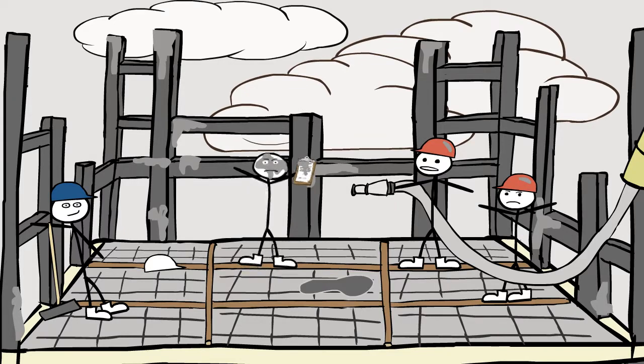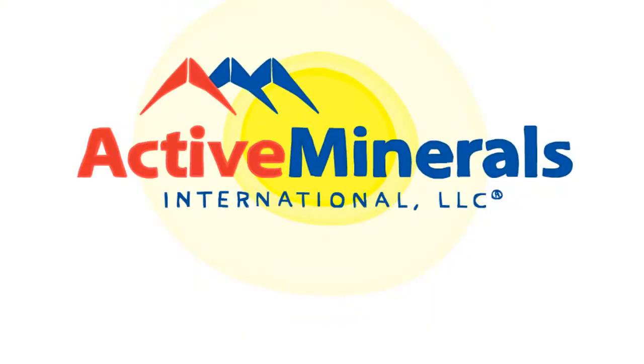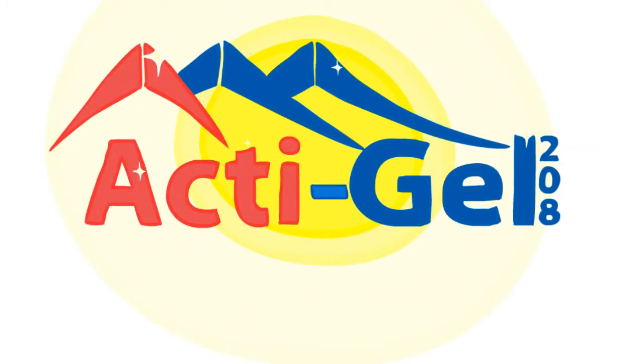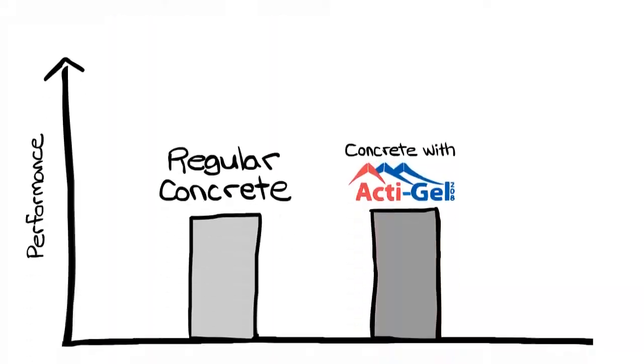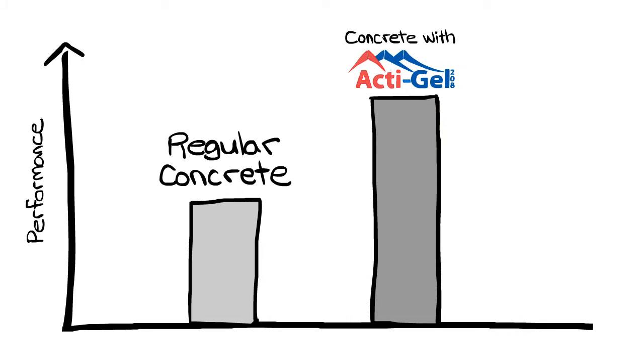Don't become the victim of bad concrete. Active Minerals is here to help. We created ActiGel, formulated as a highly purified magnesium aluminum silicate made from a patented process. ActiGel is a concrete additive that dramatically enhances the performance of concrete.